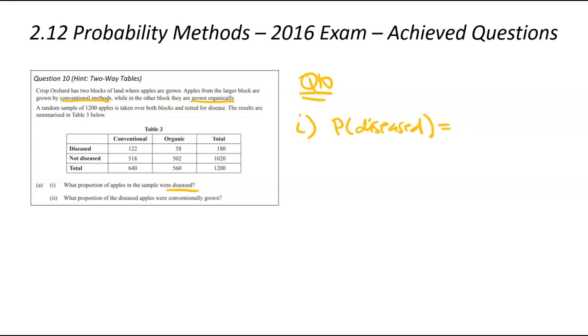Probability that the apple was diseased. Two-way tables. I always encourage us to think about F over T. Total. How many apples are there in total? That's the 1,200 down there. So, 1,200 apples in total. Of those 1,200, how many were diseased? That is 180. And put that into a calculator, you're going to get 0.15. So, about 15% of the apples were diseased.